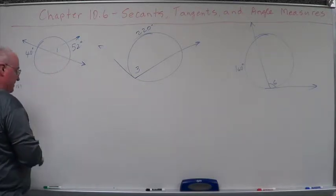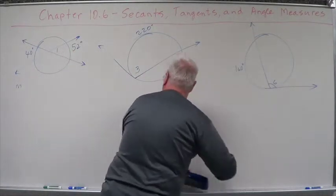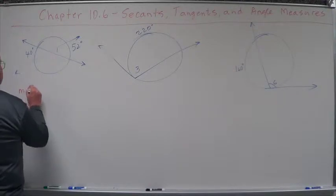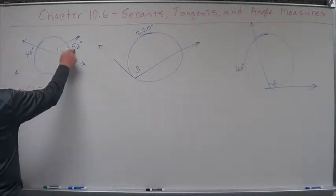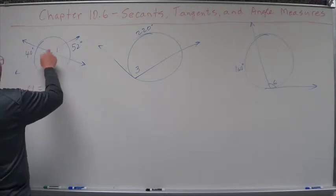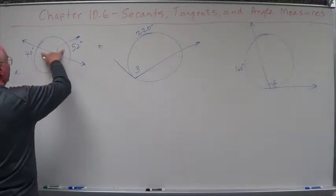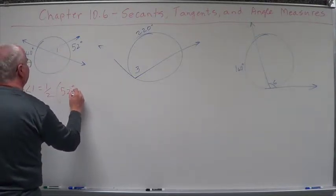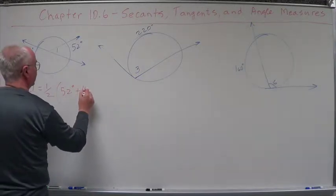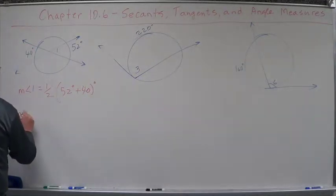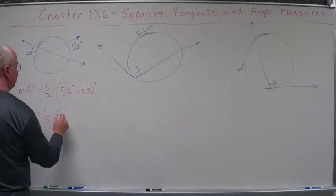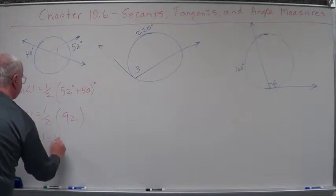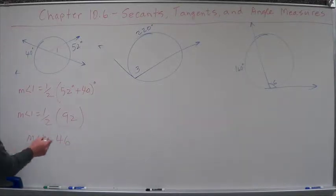We measure, let's get a different color so we know what we're doing here, so you can actually see it. Measure angle one is going to equal one half of the arcs created by this. The angle and its vertical, so the angle is 52 degrees, its vertical is 40. So that measure of angle one equals one half of 92. Measure of angle one equals 46.